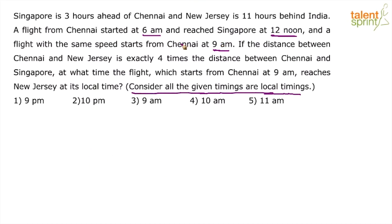Singapore is 3 hours ahead of Chennai, and New Jersey is 11 hours behind India. You need to understand this clearly. What does 3 hours ahead mean? If Singapore is 3 hours ahead, and it is 6 am in Chennai, it will be 9 am in Singapore at the same time — 3 hours ahead.